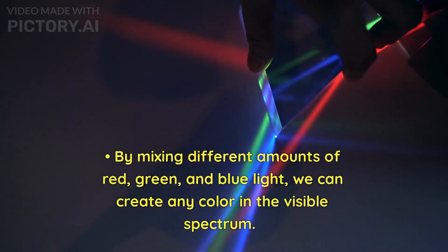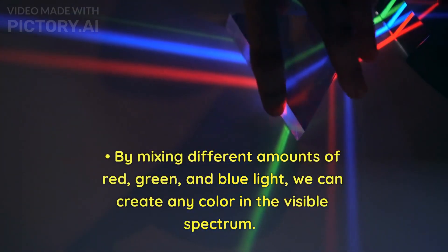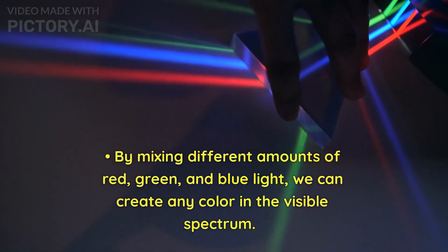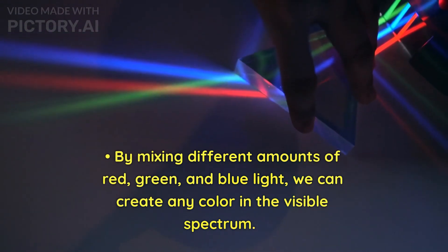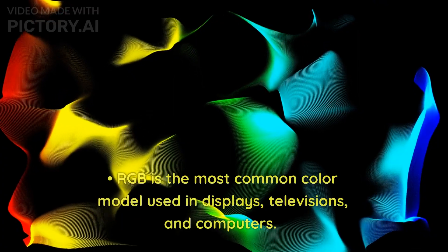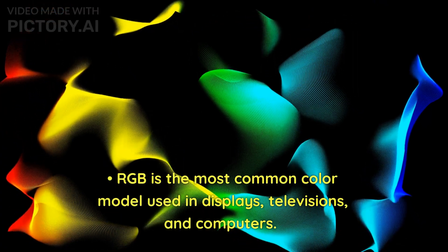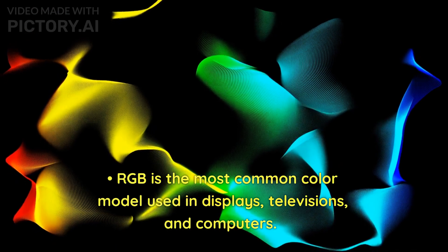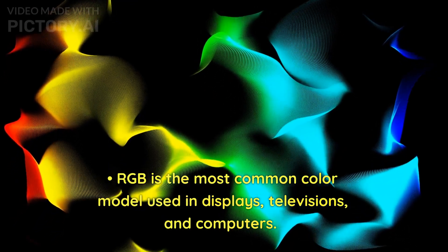By mixing different amounts of red, green, and blue light, we can create any color in the visible spectrum. RGB is the most common color model used in displays, televisions, and computers.